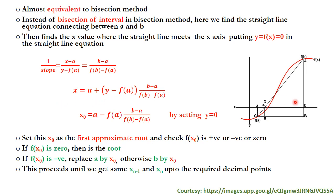We have to find where the straight line meets the x-axis, i.e., where y = 0. Setting y = 0 in the equation, the first approximate root x₀ is obtained as: x₀ = a − f(a) · (b − a) / (f(b) − f(a)).